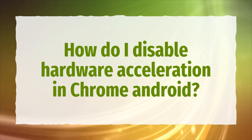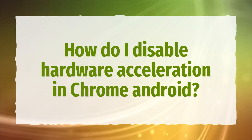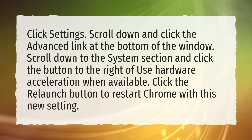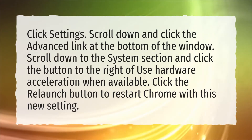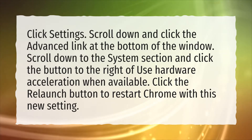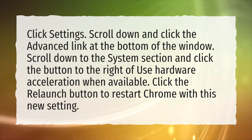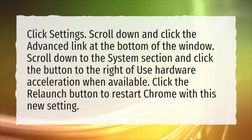How do I disable hardware acceleration in Chrome Android? Click Settings. Scroll down and click the Advanced link at the bottom of the window. Scroll down to the System section and click the button to the right of 'Use hardware acceleration when available.' Click the Relaunch button to restart Chrome with this new setting.